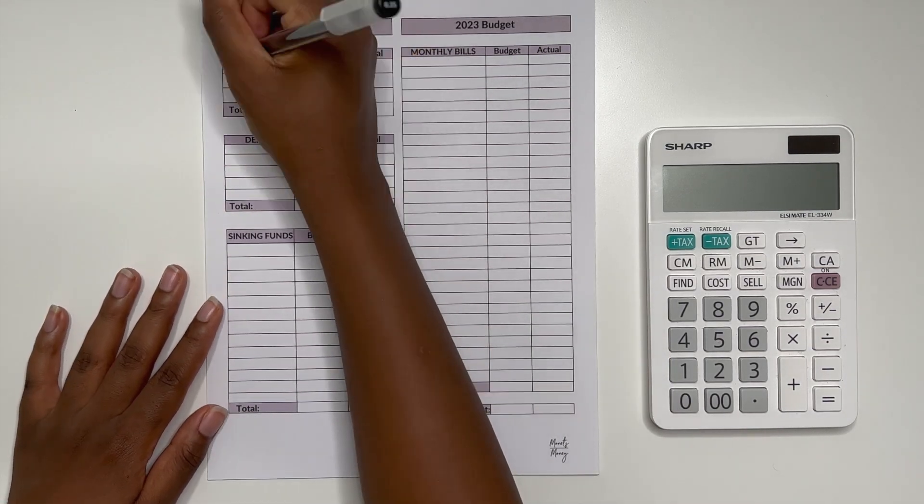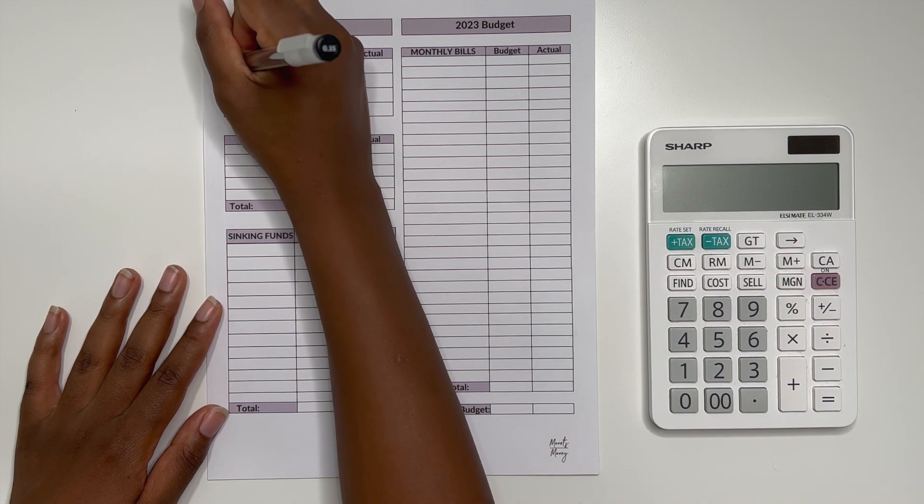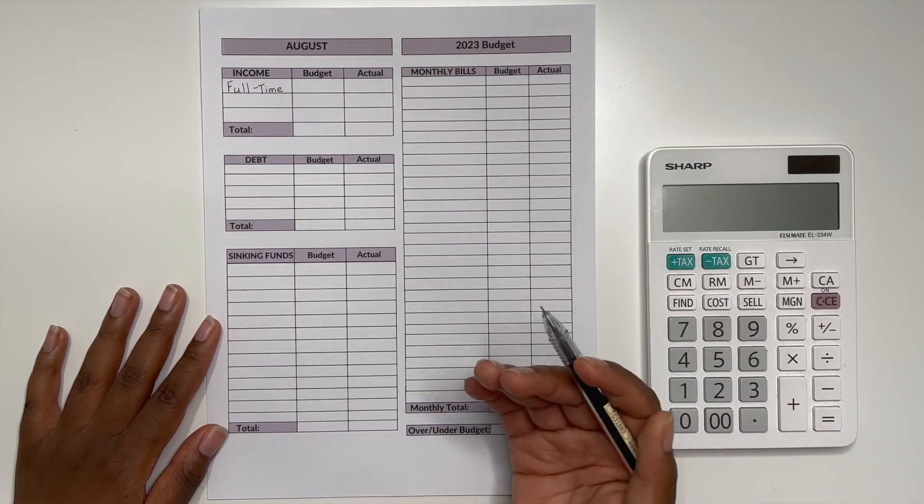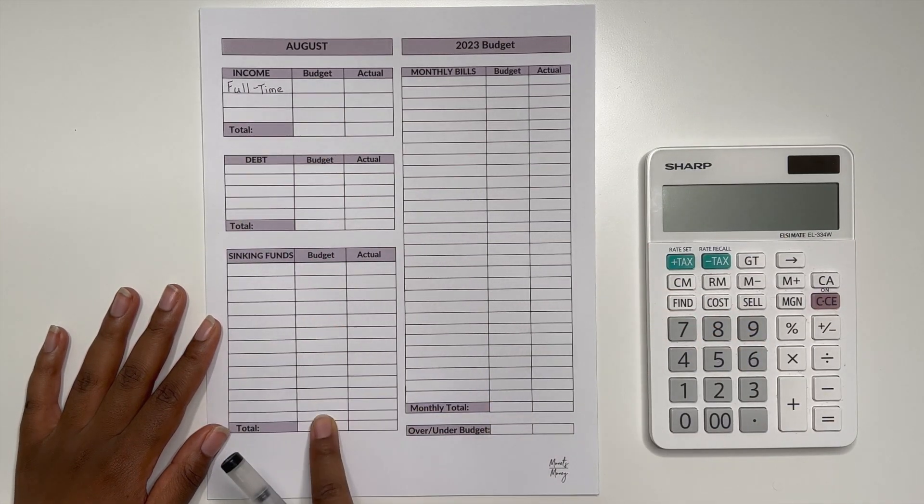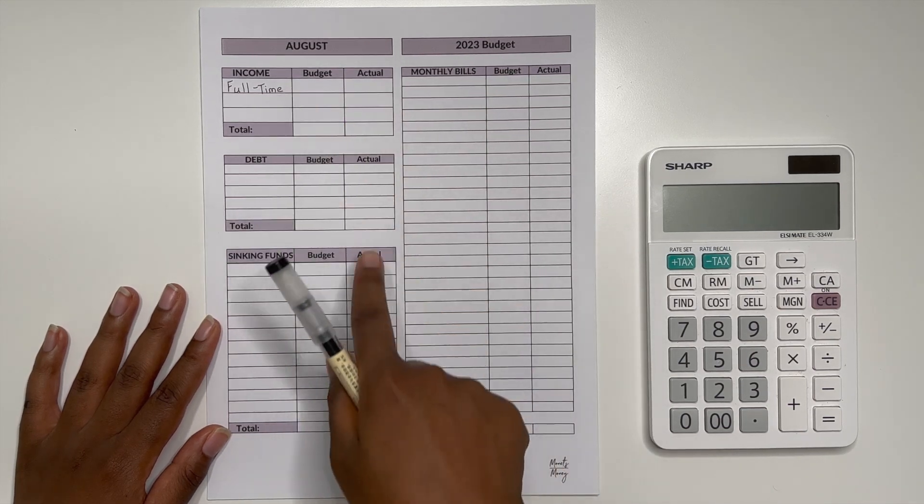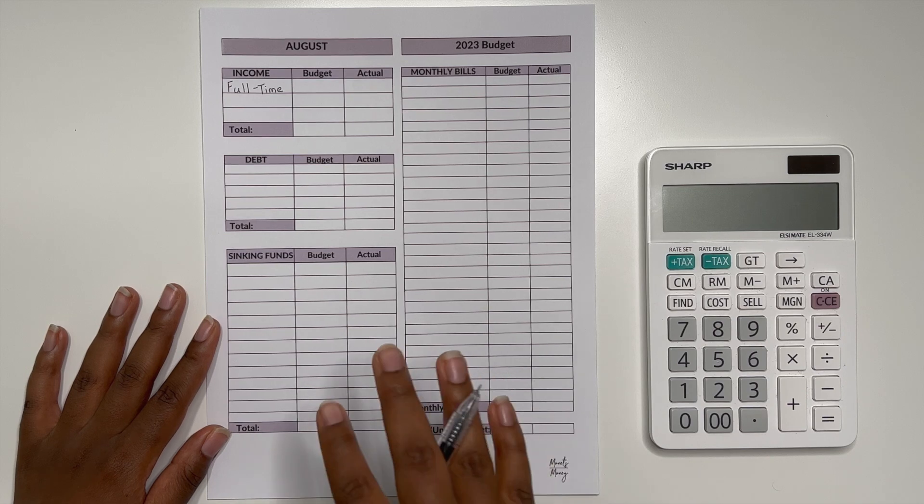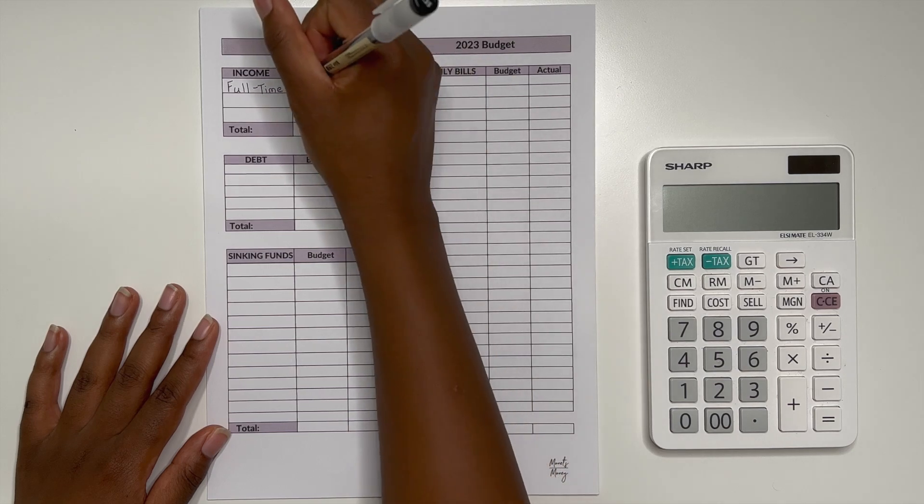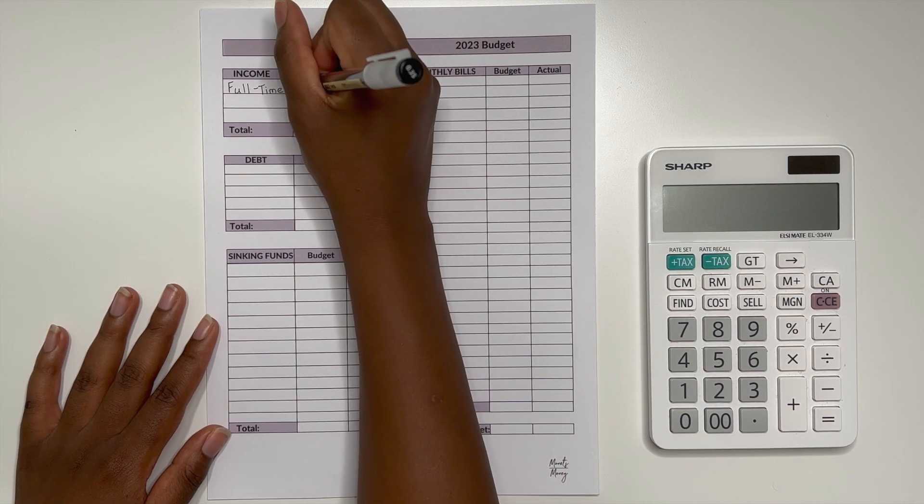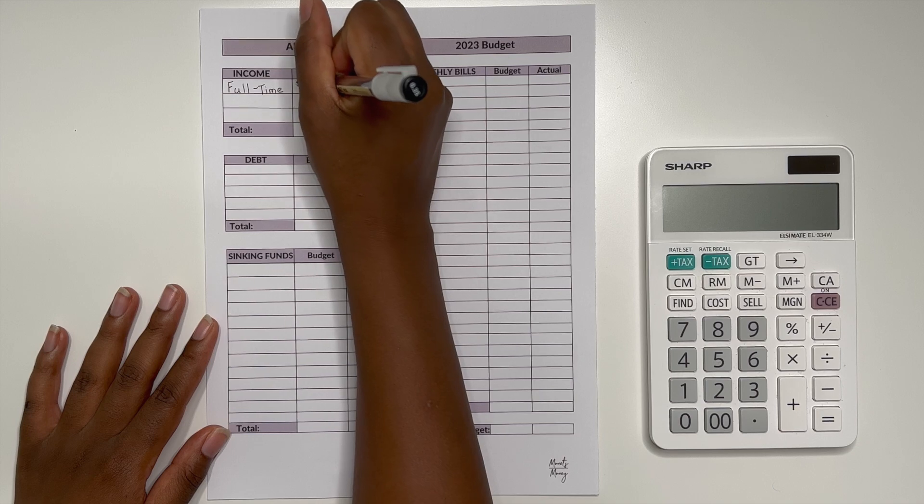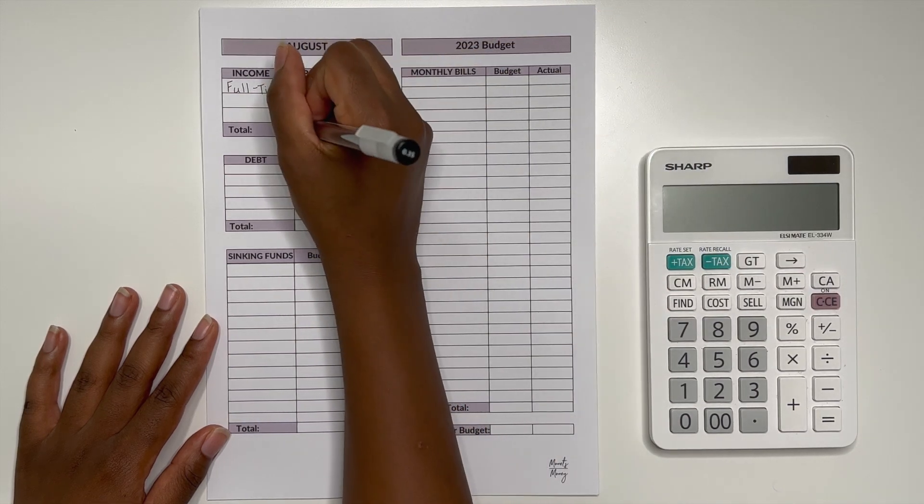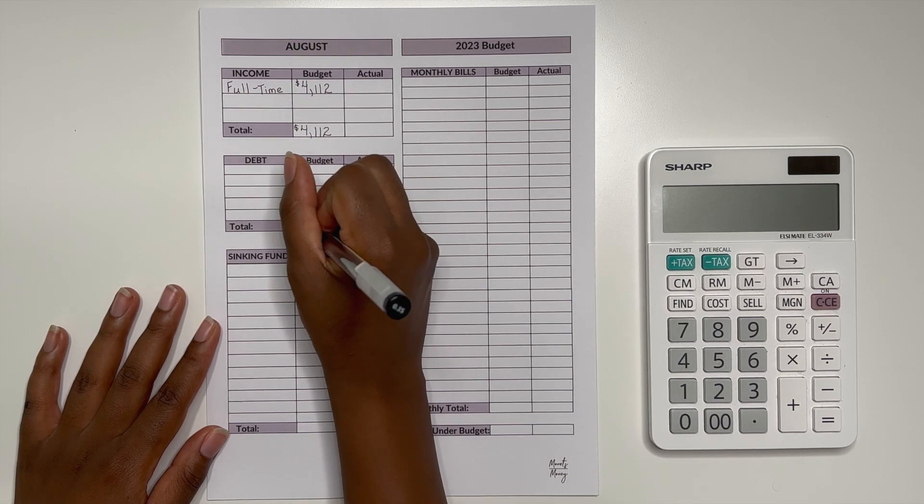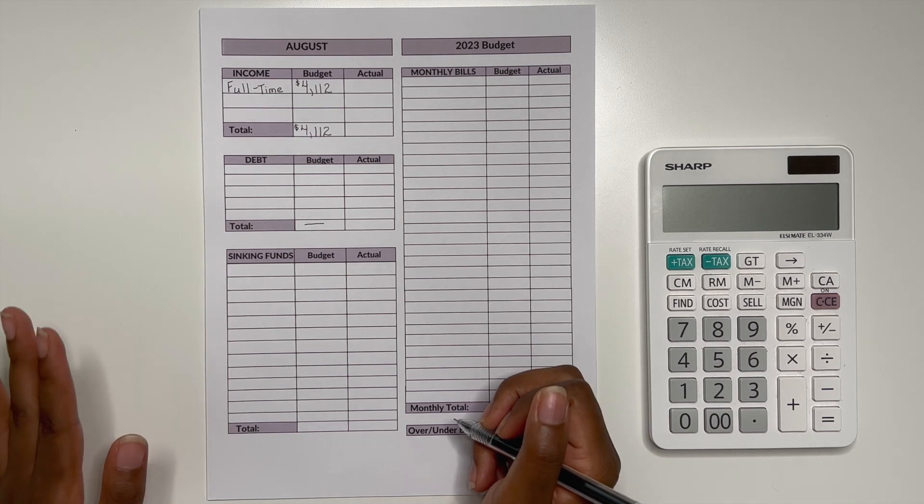So looking for the month of August we can first fill out for income and I am going to write my full time. So this is of course income that I am budgeting to earn from my full-time job. We're just going to fill out all of the budget columns and then at the end of the month is when I come in and fill out actual to see how we compared versus how we planned and how we actualized. So budgeting for the month I'm going to predict that I'm bringing in $4,112 from my full-time so I will write that as my total. And then in regards to debt we are going to leave this blank because we are debt-free so we don't have to worry about that.